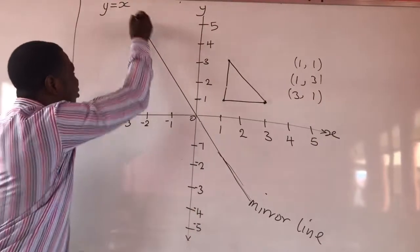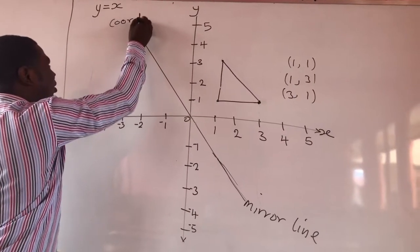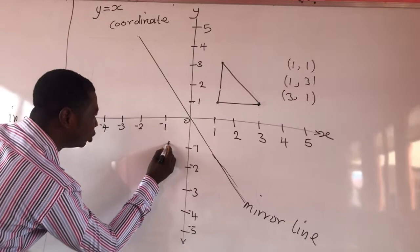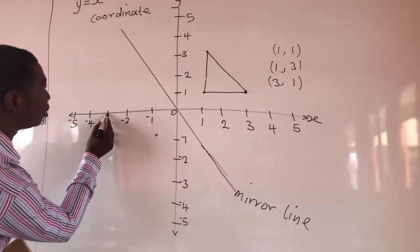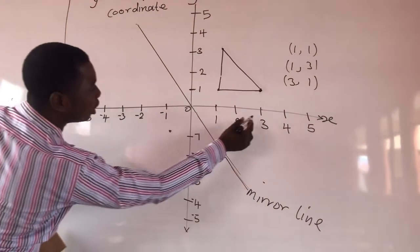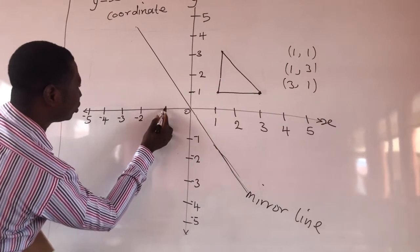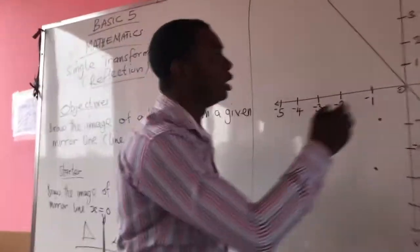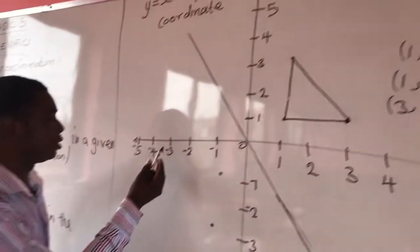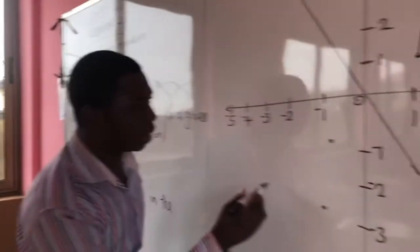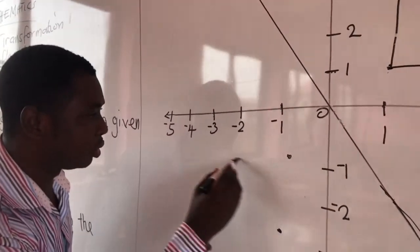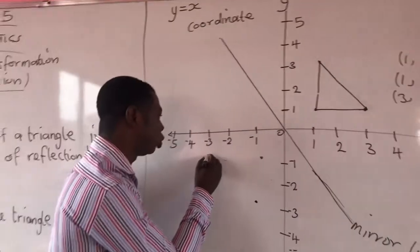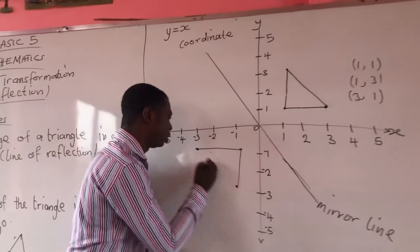So the original point one and one reflects to one and one. The point one and three — look at the x-axis, put one and then three — becomes one and three. And the point three and one becomes one and three. Now I put my dots here and I am going to draw the points to complete the reflected image.